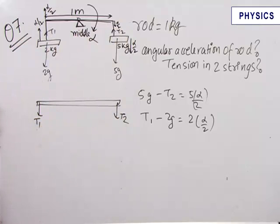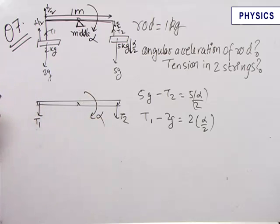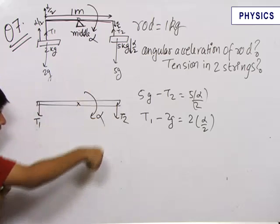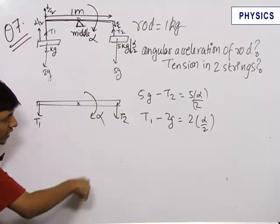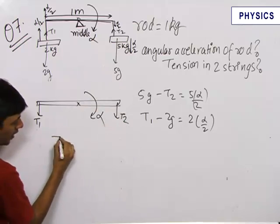It rotates like alpha in this direction. We rotate our hands in direction of alpha, we get alpha inside. This tension is trying to rotate the rod in the clockwise direction again, so this is in the direction of alpha.